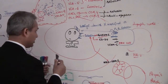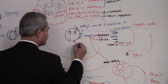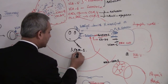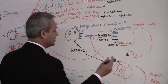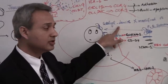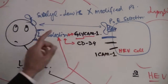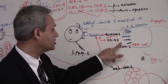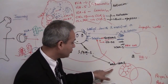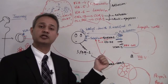These T cells also express L-PAM-1 — lymphocyte Peyer's patch adhesion molecule. L-PAM-1 only connects to cells in Peyer's patches. So to summarize: sialyl Lewis X connects to P and E selectins on HEV; L-selectin connects to glycam-1 and CD34; and L-PAM-1 connects with MADCAM-1, the mucosal adhesion cell adhesion molecule present on the high endothelial venule of a Peyer's patch.